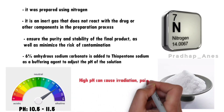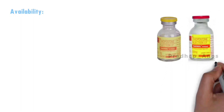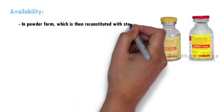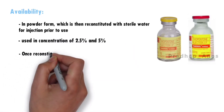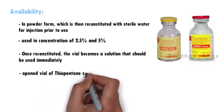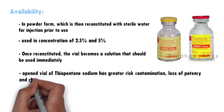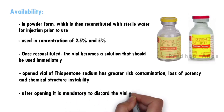If the pH is too high, it can cause irritation, pain, or even tissue damage at the site of injection. To avoid this, anhydrous sodium carbonate is added to neutralize the excess hydrogen ions in the solution, which helps stabilize the pH and ensure the drug is effective and safe. Thiopentone sodium injection is available in vials containing 0.5g and 1g of the drug in powder form, reconstituted with sterile water for injection before use, in concentrations of 2.5% and 5%. Once reconstituted, the solution should be used immediately. An open vial has a greater risk of contamination, loss of potency, and chemical instability, and is typically stable for a few hours to a maximum of 24 hours. After opening, it is mandatory to discard the vial within 24 hours.